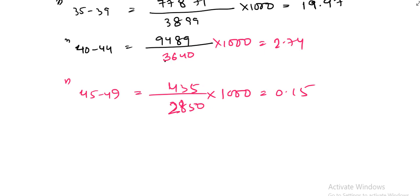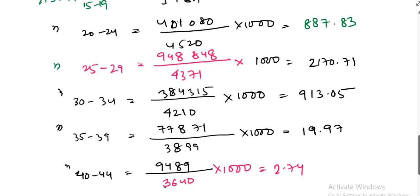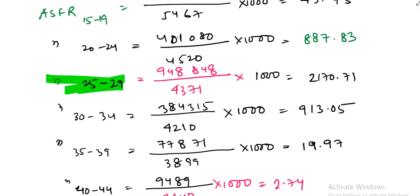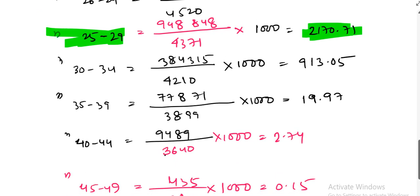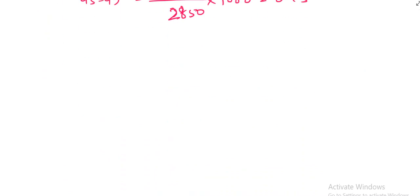Which group ASFR is highest? The ASFR is highest in age group 25 to 29, that is 2,170.71. So what is the skewness of the fertility curve? The fertility curve is generally bell-shaped and skewed to the right, positively skewed, as fertility rates peak in certain age groups, usually mid-20s to mid-30s, and decline thereafter.